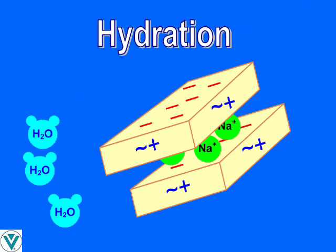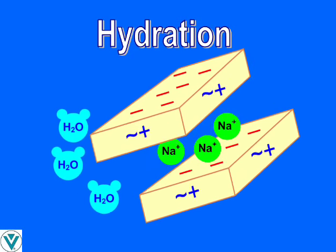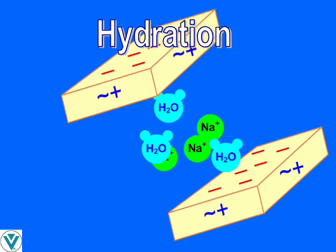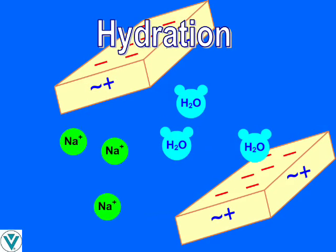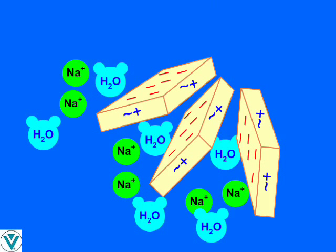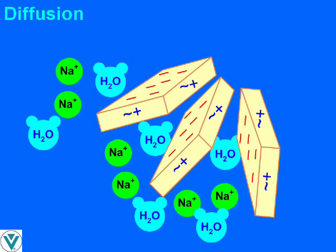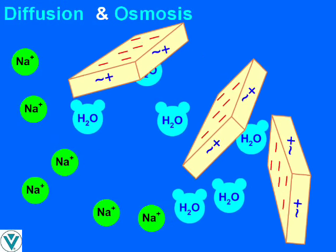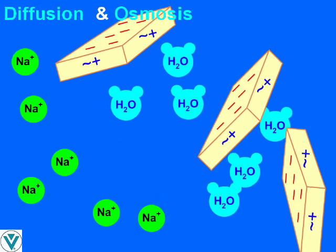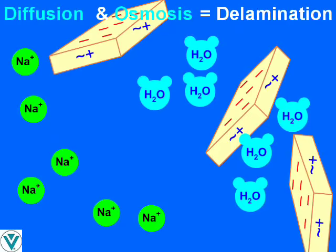When clay is dispersed in water, the water penetrates between platelets forcing them further apart. The sodium ions begin to diffuse away from platelet faces. Diffusion — the movement of cations from between platelets out into the water — and osmosis — the movement of water into the space between platelets — then promote delamination until platelets are completely separated.